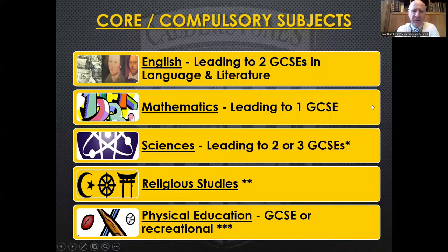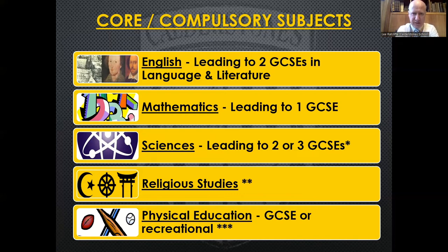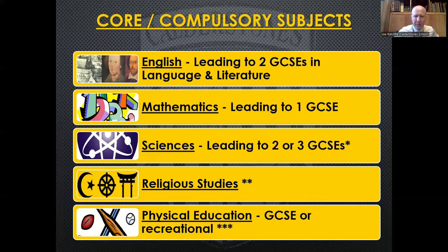These are the subjects that every child has to study. Every child has to study English — at this school that leads to two GCSE qualifications: one in English language and one in English literature. That's two qualifications in the bank before children even choose their options. Every child has to do maths, which leads to one GCSE qualification. So that's compulsory regardless of which school you attend.